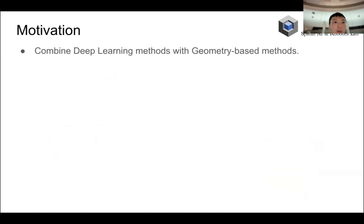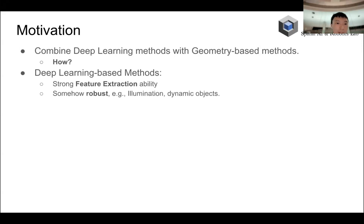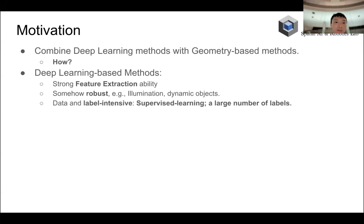Many people believe that the future of SLAM should combine the deep learning method with the geometry-based method. But the question is how. So let's first list several properties of deep learning-based methods and classic geometry-based methods. Deep learning has very strong feature extraction ability and is somehow robust — for example, robust to illumination changes and dynamic objects. But it is very data and label intensive; most existing algorithms are supervised learning, which means they require a large number of labels.